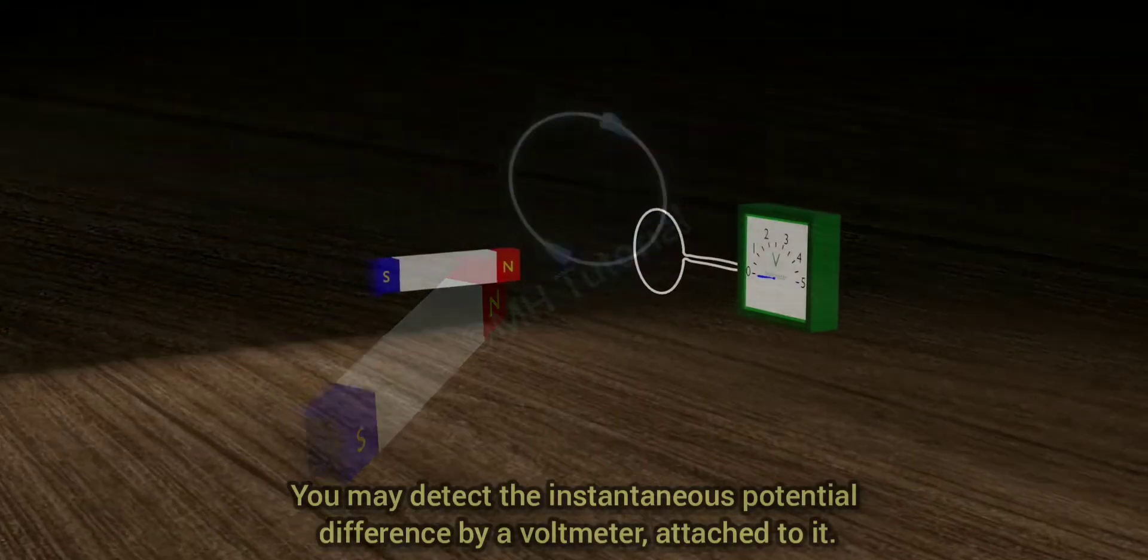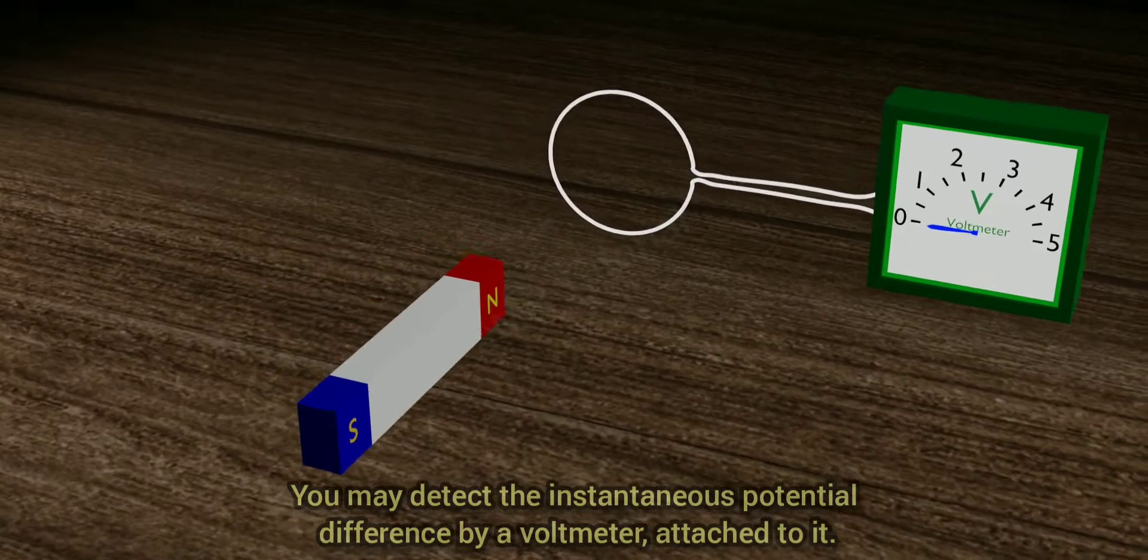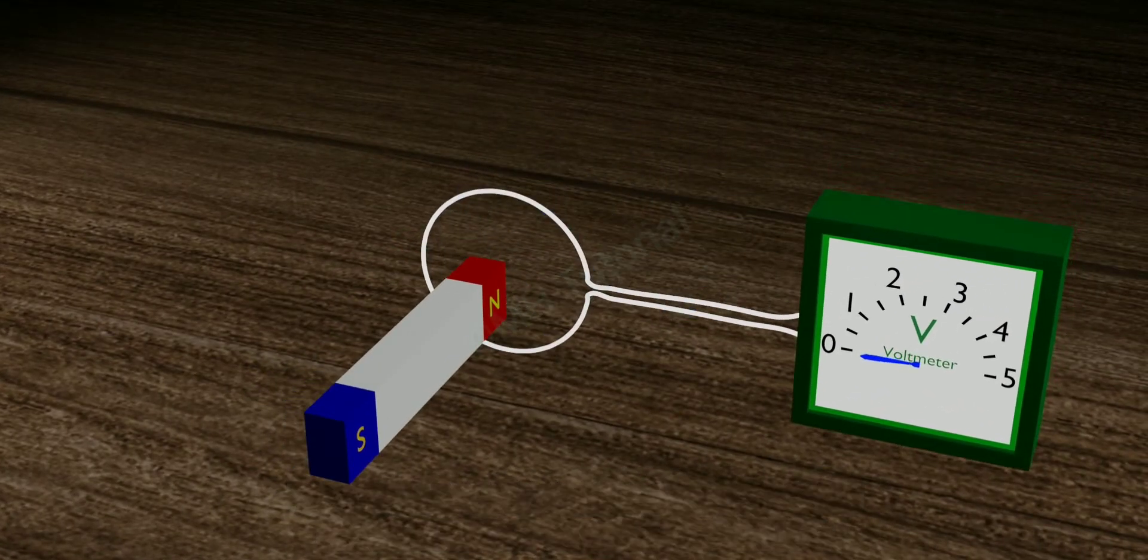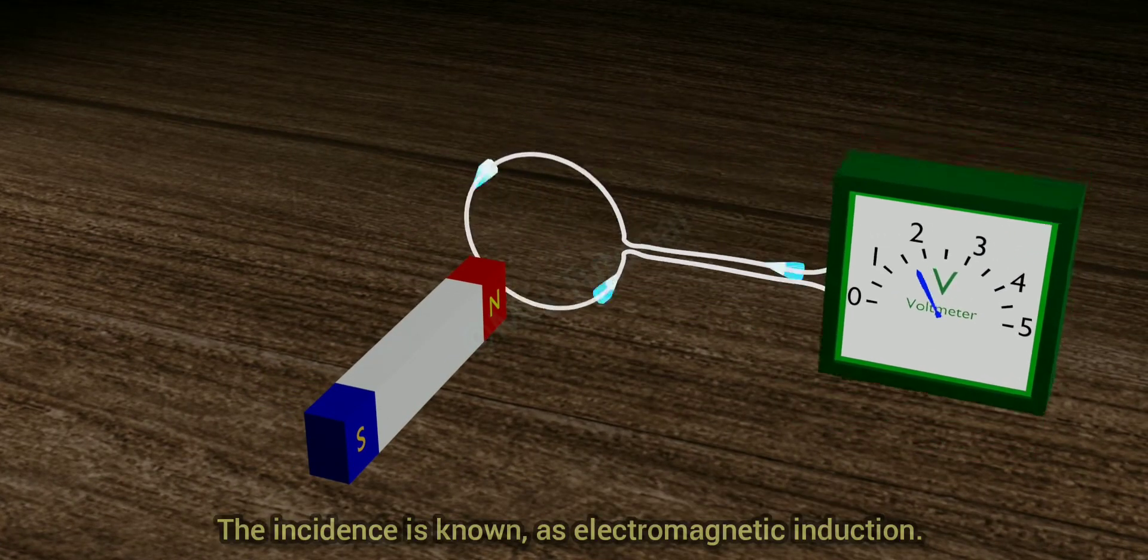You may detect the instantaneous potential difference by a voltmeter attached to it. The incidence is known as electromagnetic induction.